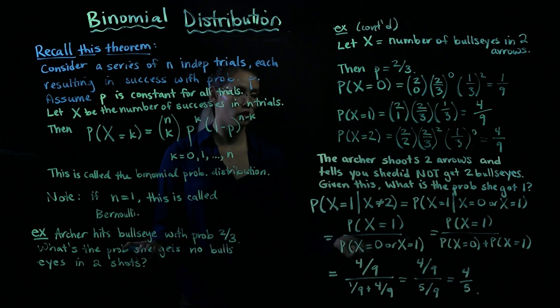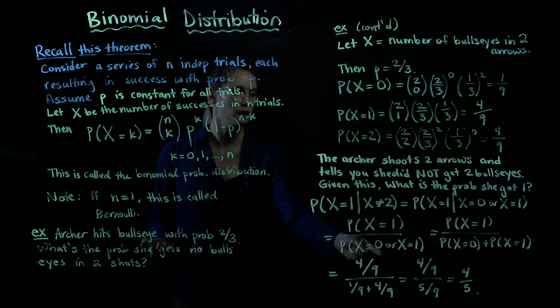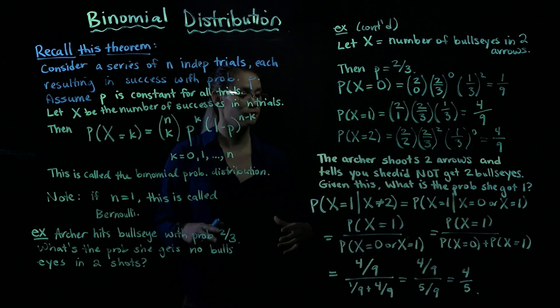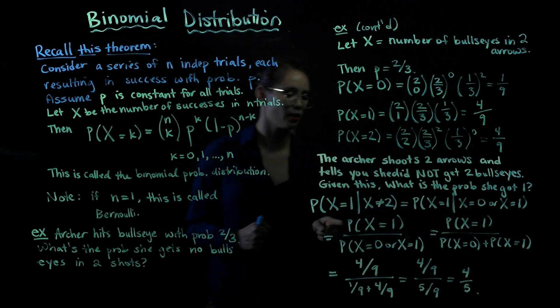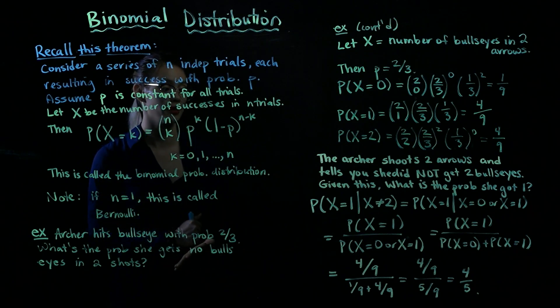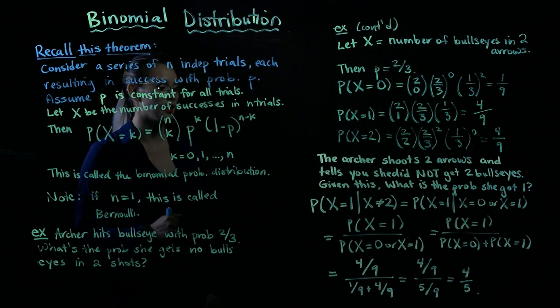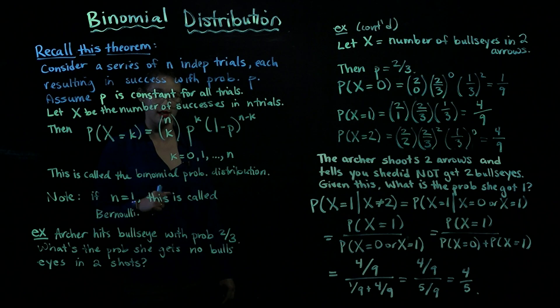Okay, what's our definition of conditional probability? We put the probability of the intersection up top and divide by the probability of the thing that is given. So the intersection of x equals one and x equals zero or one is just x equals one. So numerator is probability x equals one. Denominator is the probability x equals zero or x equals one.